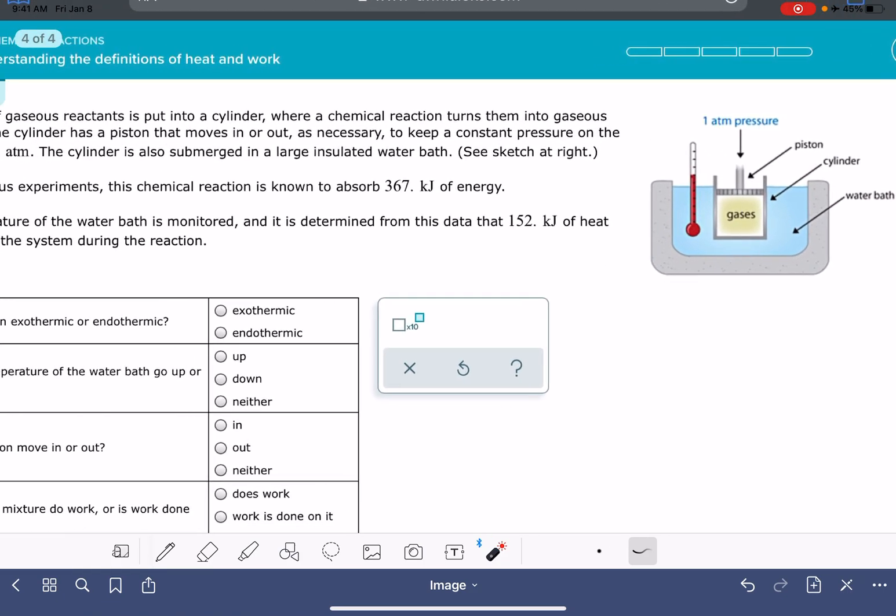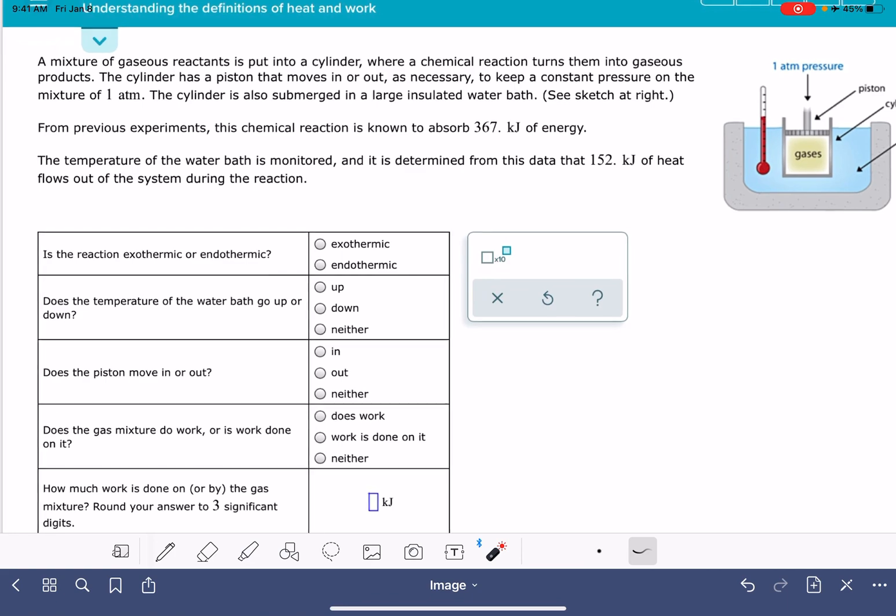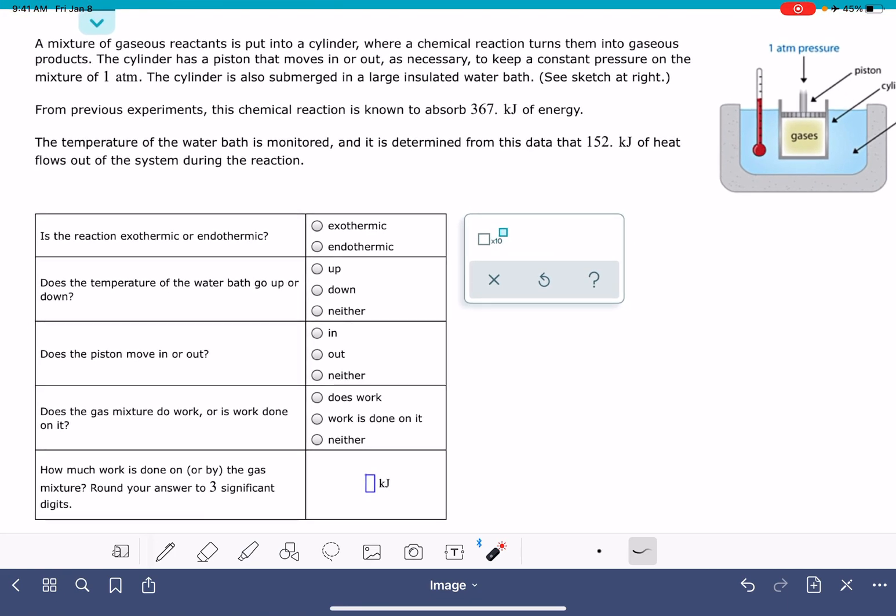Let's take a look at the information that's provided to us in the problem. So first it says, from previous experiments, this chemical reaction is known to absorb 367 kilojoules of energy. So that is referring to the delta U for this particular reaction. We do need to know more than just 367—we need to know if this is a positive or a negative 367.